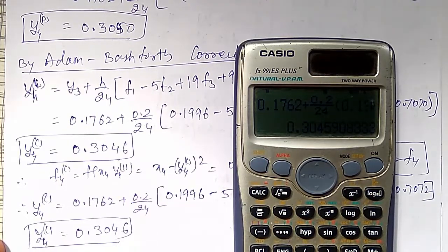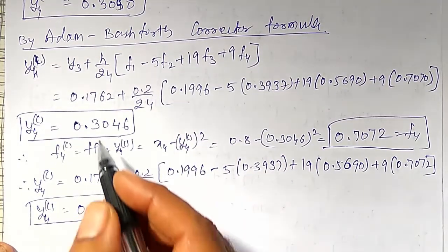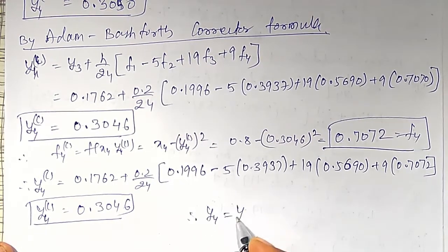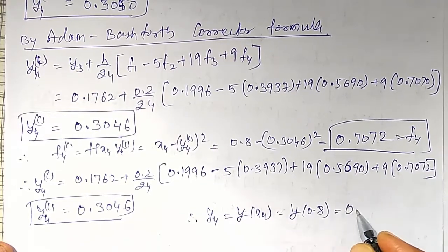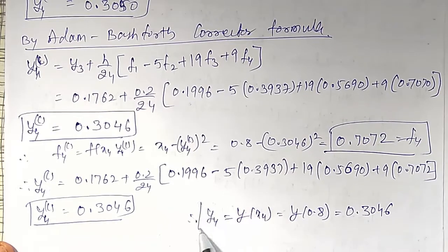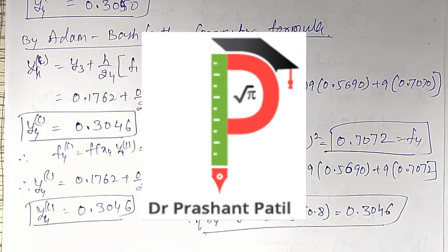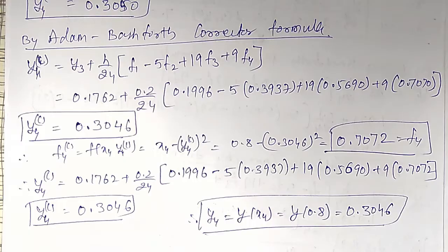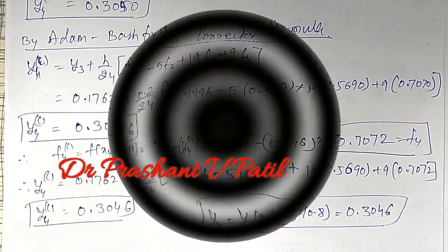Therefore, in the second approximation — applying the corrector formula only twice — I get equal values up to 4 decimal places. Therefore my y4 value, y(0.8) = 0.3046, equal up to 4 decimal places, using Adam Bashforth method. If you are not subscribed to my channel, please subscribe. Don't forget to hit the bell icon to get notifications of my next videos. Like, comment, and share this video. Thank you friends.